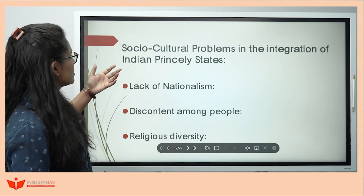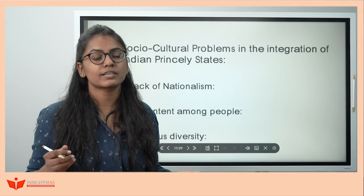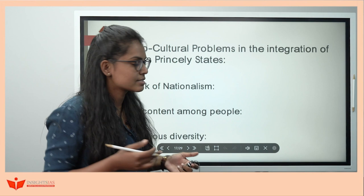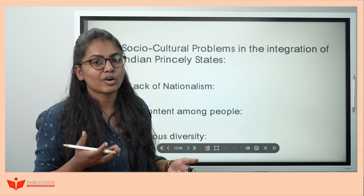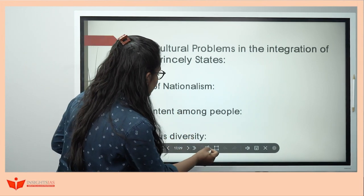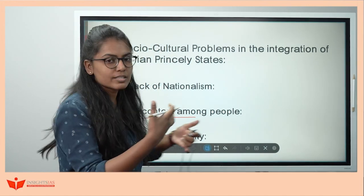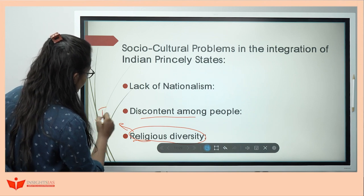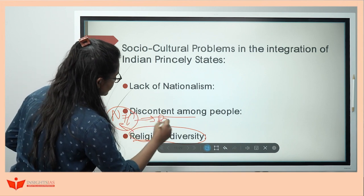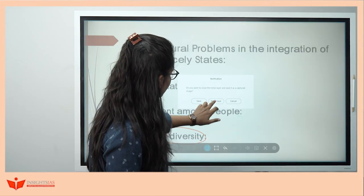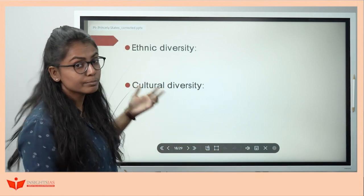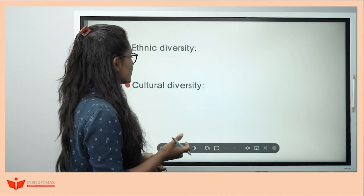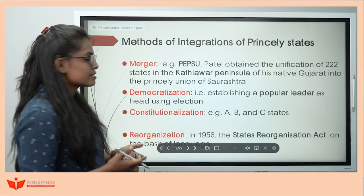Now let's see the socio-cultural problems. First: lack of nationalism — here you can give the example of Praja Mandal, the movement in which princely states took part in the process of nationalism, but it was not active in all princely states, so people were not equally excited to join mainland India. Then discontent among people toward the ruler itself. Then religious diversity — you can give the example of the Nawab of Hyderabad and Operation Polo. Then ethnic diversity — give the example of Northeast India, Manipur. Then cultural diversity — like within Jammu and Kashmir alone there were so many cultures, which created problems in smooth integration.